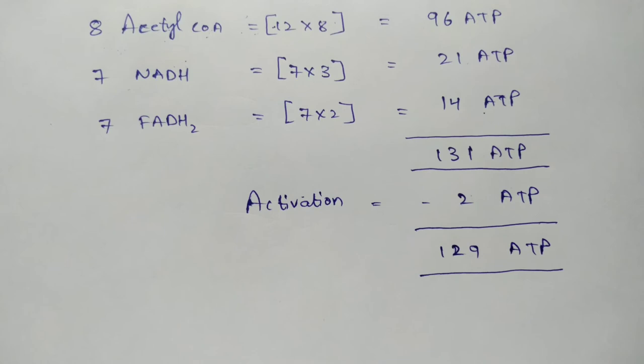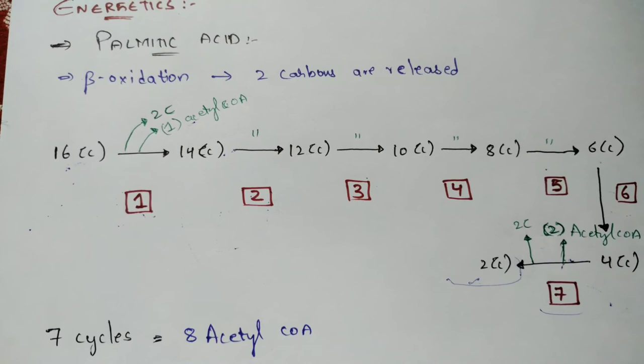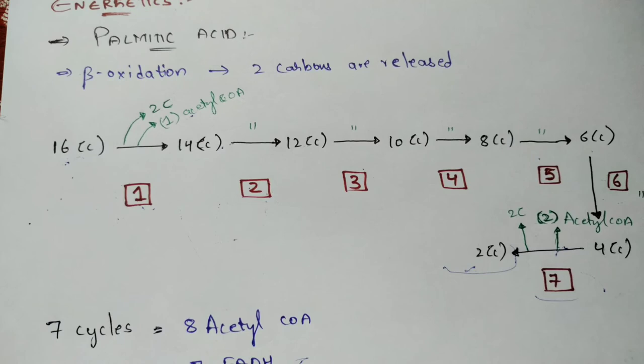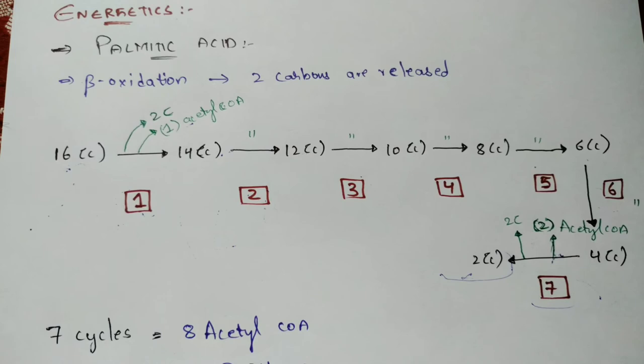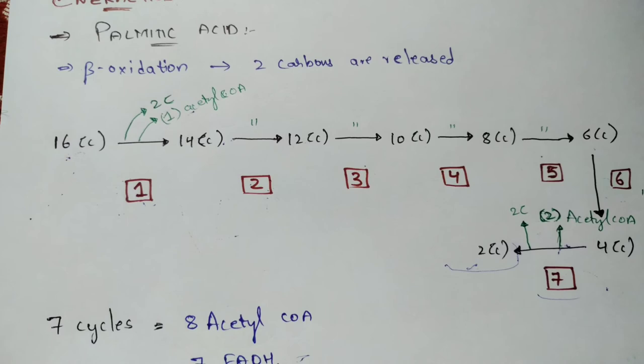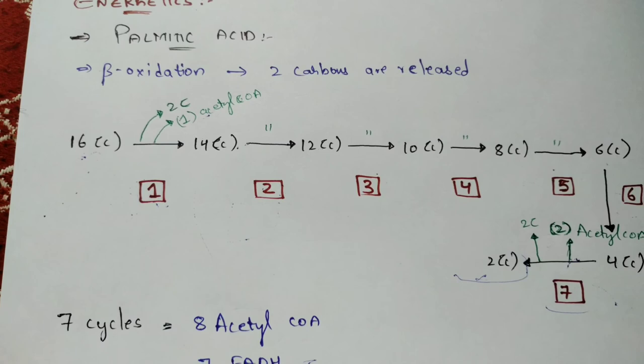This is about the energetics of the oxidation of fatty acids, using palmitic acid as an example. You can apply the same approach to any other fatty acid. In this video, I explained the introduction, three steps — activation, transport, and beta oxidation proper — and energetics using palmitic acid. Notes for this topic will be given in the WhatsApp group. Thank you for watching; please subscribe to the channel and press the bell icon for the latest updates.